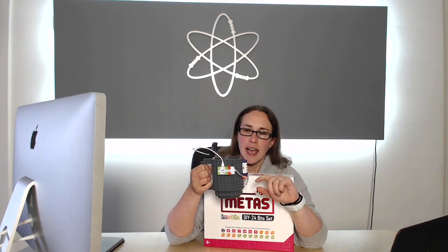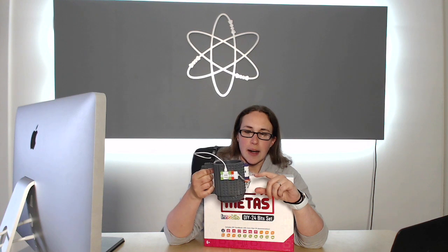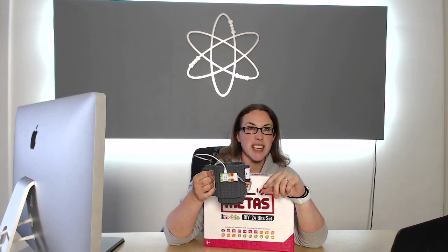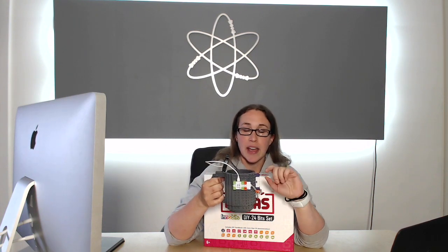Today I'm here to show you the new Innobits kit. It's a 24-piece DIY kit that has snap-together components. Each of the components has a positive and negative which join up and they magnetize so you can't put them together incorrectly. So let's have a look what's in the box.